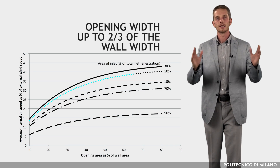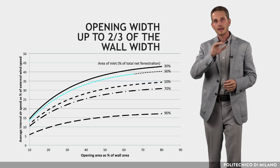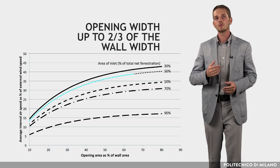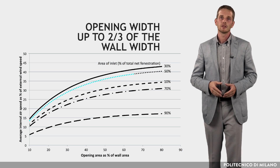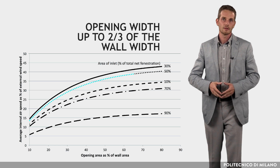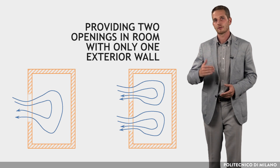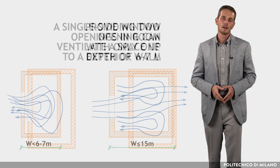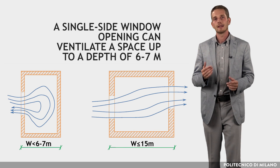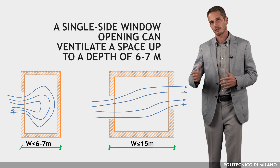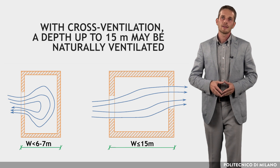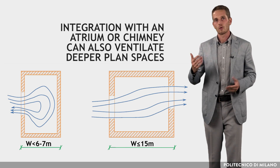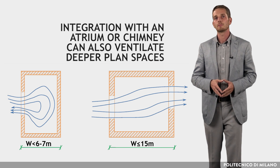In rooms of normal size which have identical windows on opposite walls, the average indoor airspeed rises rapidly by increasing the width of the window up to two thirds of the wall width. Beyond that, the increase in indoor airspeed is less effective. In the case of rooms with only one wall exposed to outside, provision of two windows on that wall is preferred to a single window. A single side window opening can ventilate a space up to a depth of 6-7 meters, while with cross ventilation, a depth up to 15 meters may be naturally ventilated. Integration with an atrium or chimney to increase the stack effect can also ventilate deeper plan spaces.